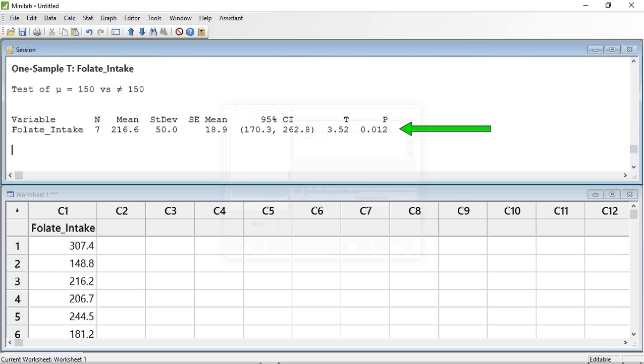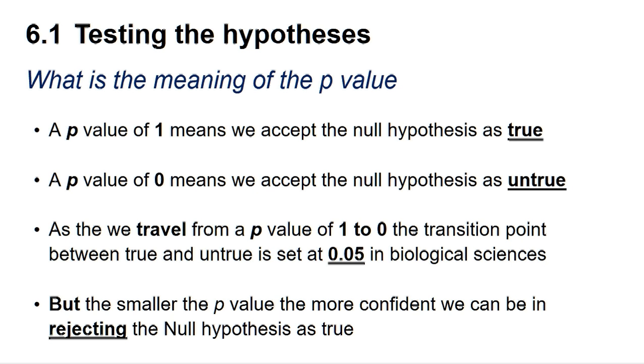We can see that Minitab has given us a p-value of 0.012. So what is the meaning of the p-value?